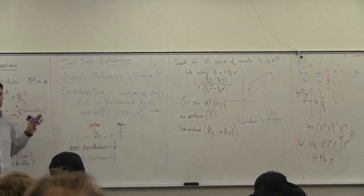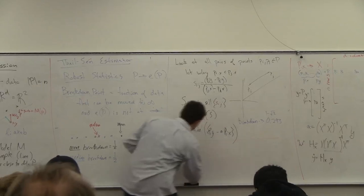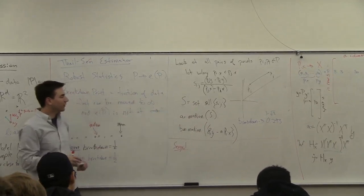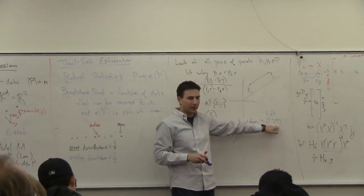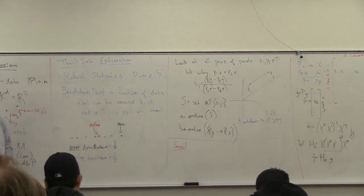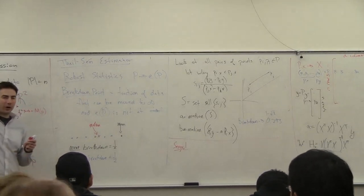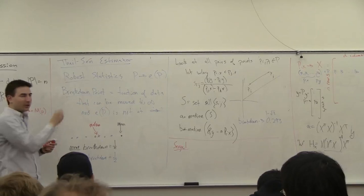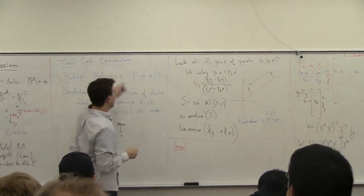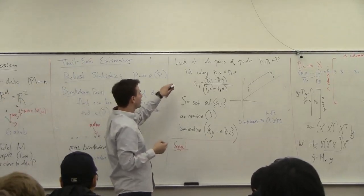The Theil-Sen estimator was the first thing that people looked at. There's a simple extension by Siegel that said: well, this one requires an n-squared step and only has a 29% breakdown point. I want to get up to the one-half breakdown point, which is as good as you can do — your breakdown point can't be higher than one half, because then you can have more than half your points all off at the library together and your estimator should be over there instead. So can we get a linear estimator with a breakdown point of one half?